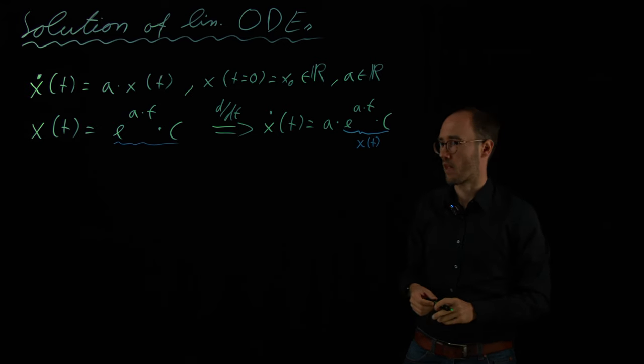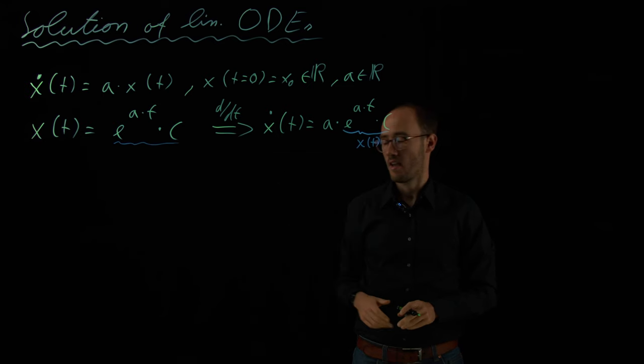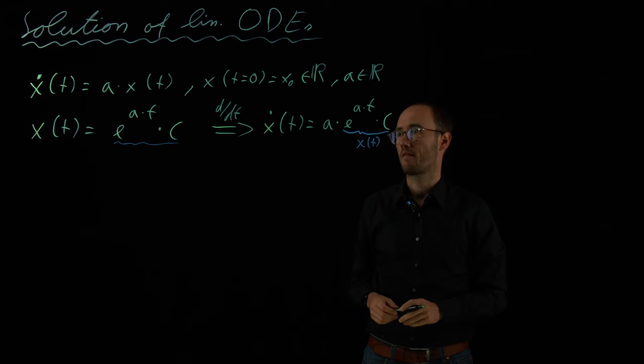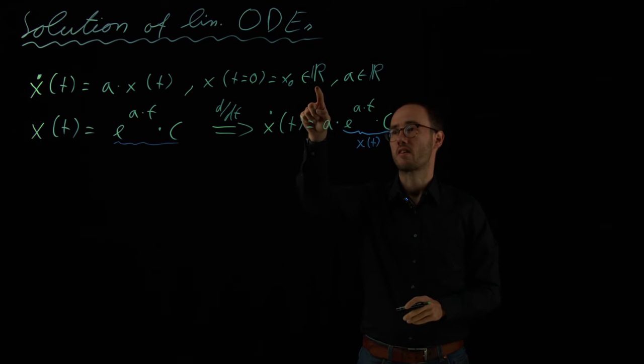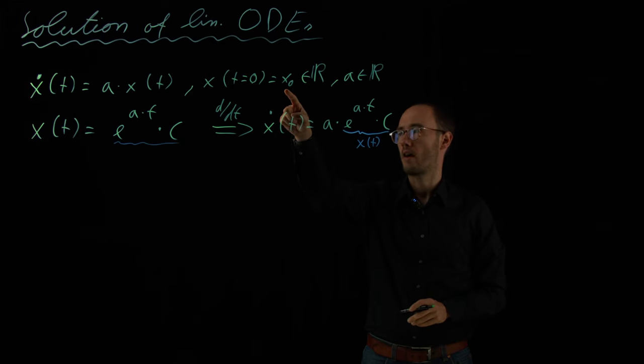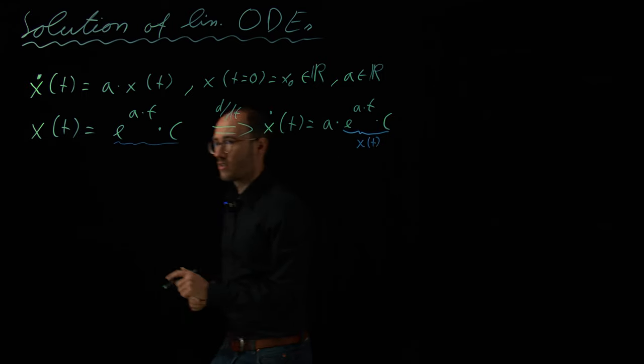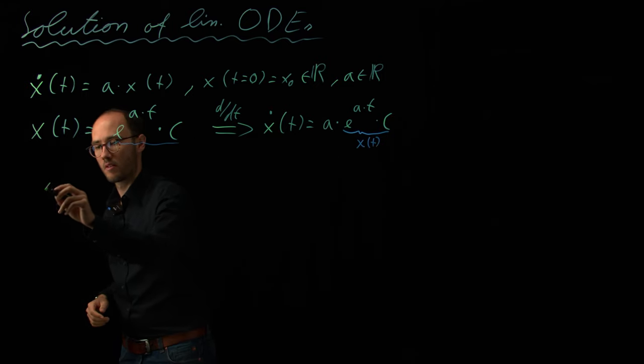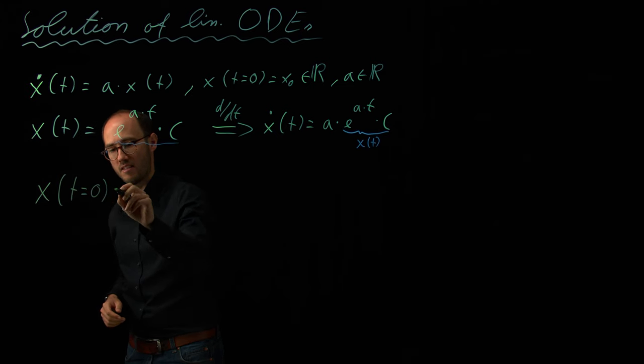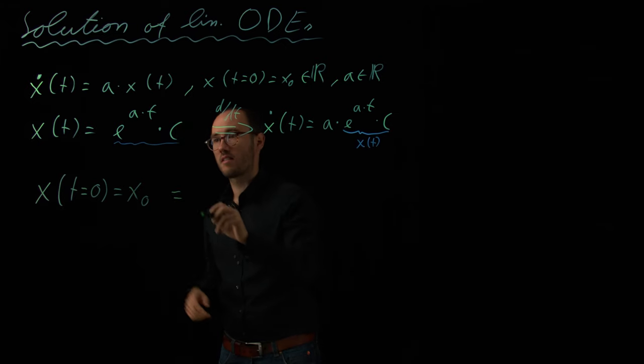Perfect. What is missing now is information regarding this constant C. And this constant C can be calculated, can be found, by now considering also our initial value. So, the initial state x zero from where we try to solve the ODE. So, therefore, very simple. We evaluate x at t zero, which is our initial value x zero.